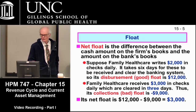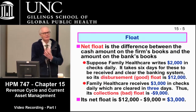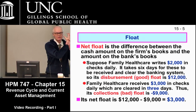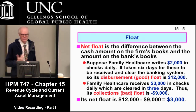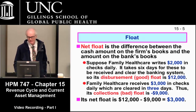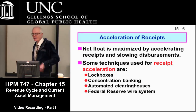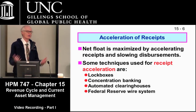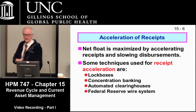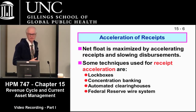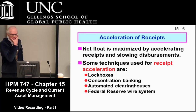The net float — $12,000 minus $9,000 equals $3,000 — is the average difference between what's on your books and what the bank has. To maximize the good float, you accelerate receipts and slow down disbursements: getting your money in as fast as possible while paying bills at the most reasonable pace.